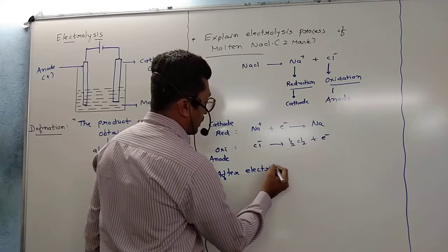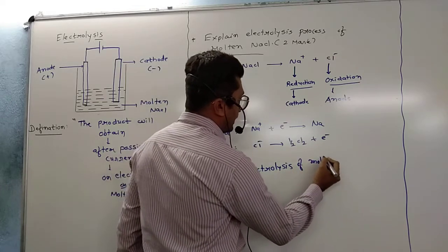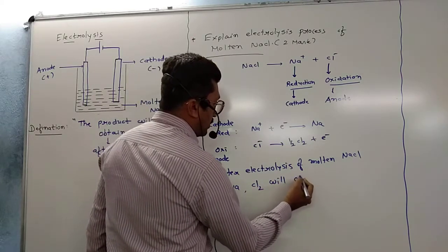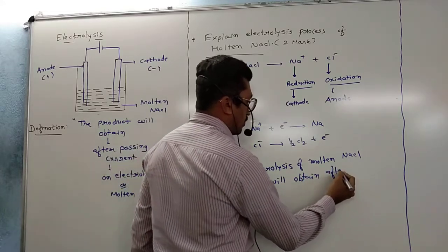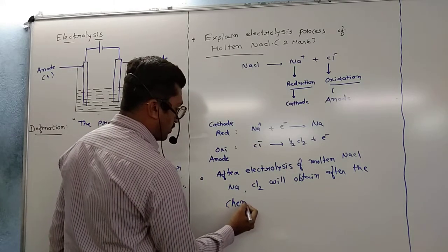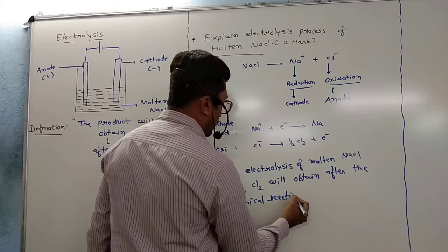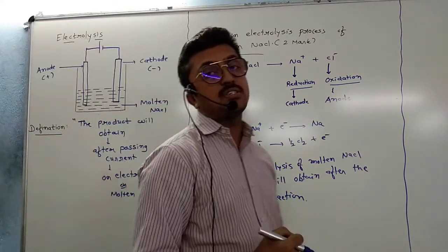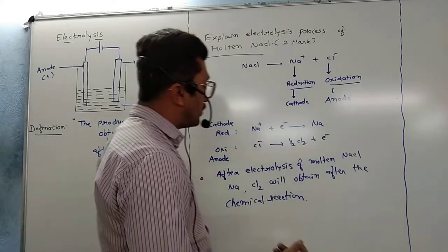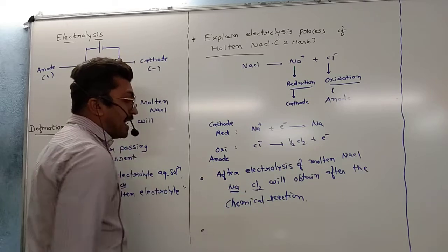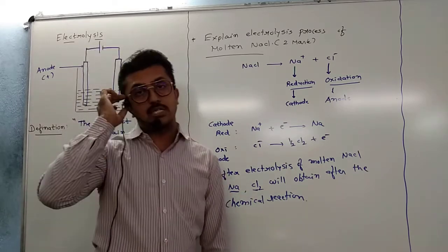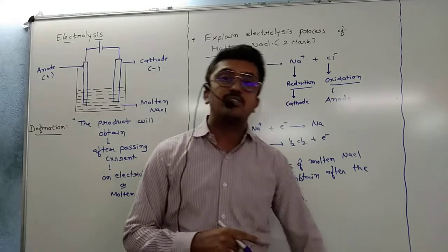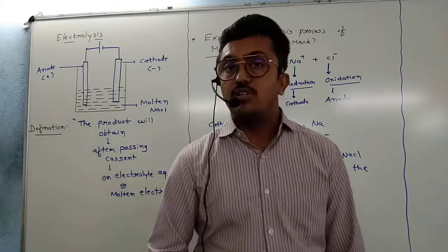After electrolysis of molten NaCl, sodium and dichlorine will be obtained after the chemical reaction. So this is the basic principle of electrolysis — sodium metal and dichlorine gas will be obtained from this chemical reaction. This is the basic principle of the electrolysis process, explained with the proper example of molten NaCl.